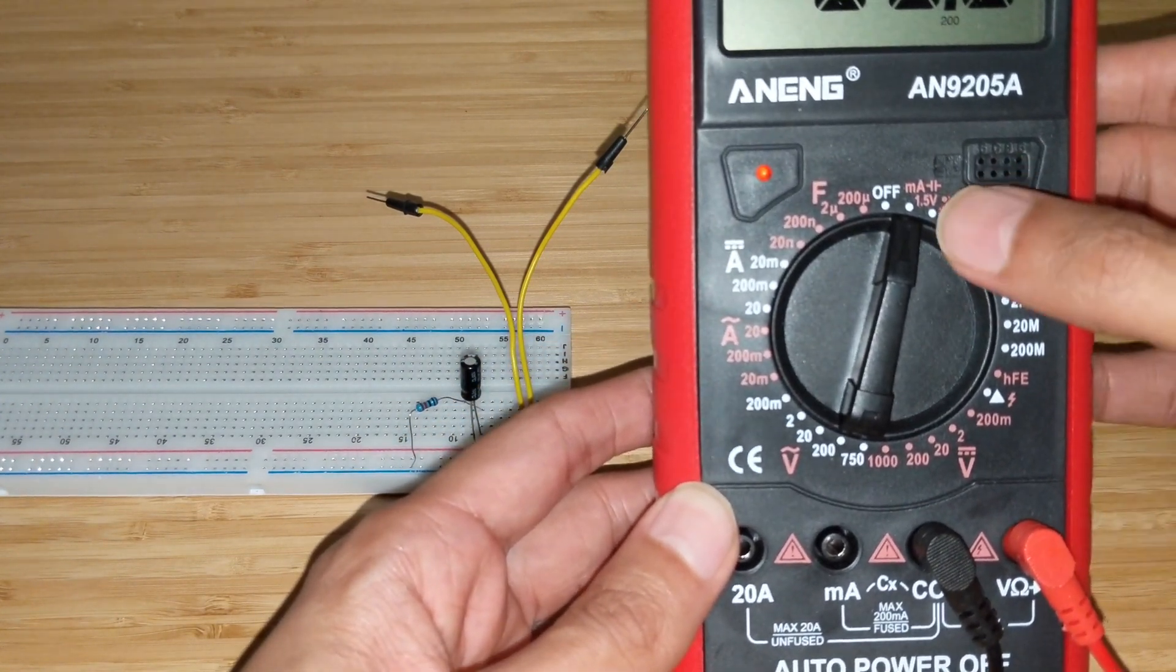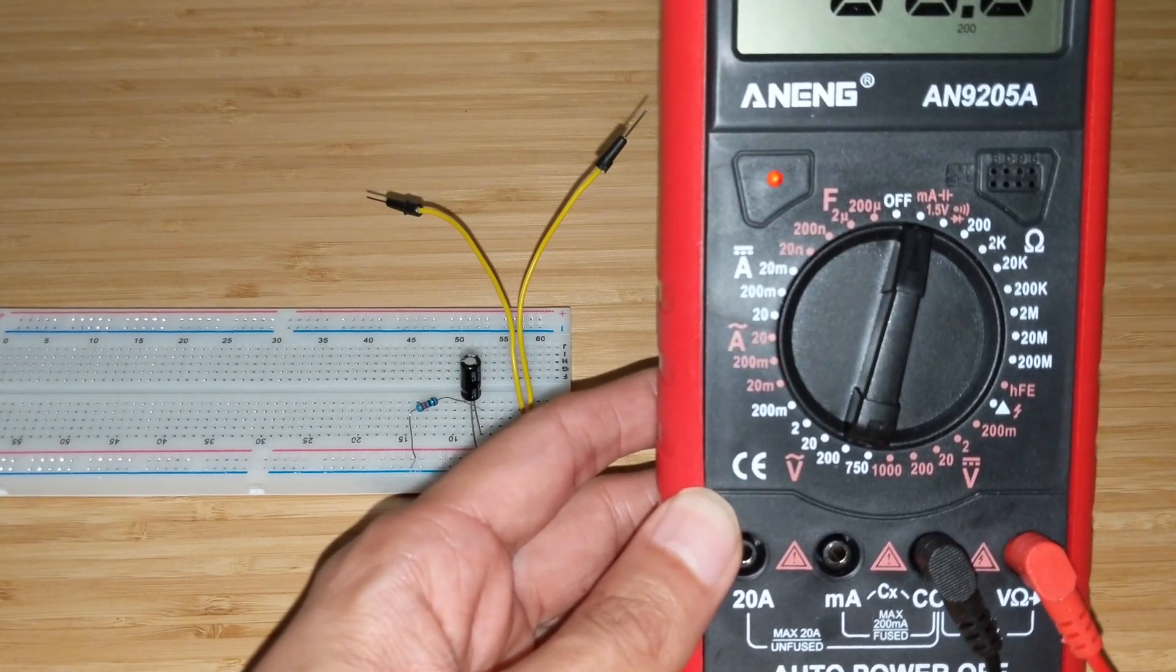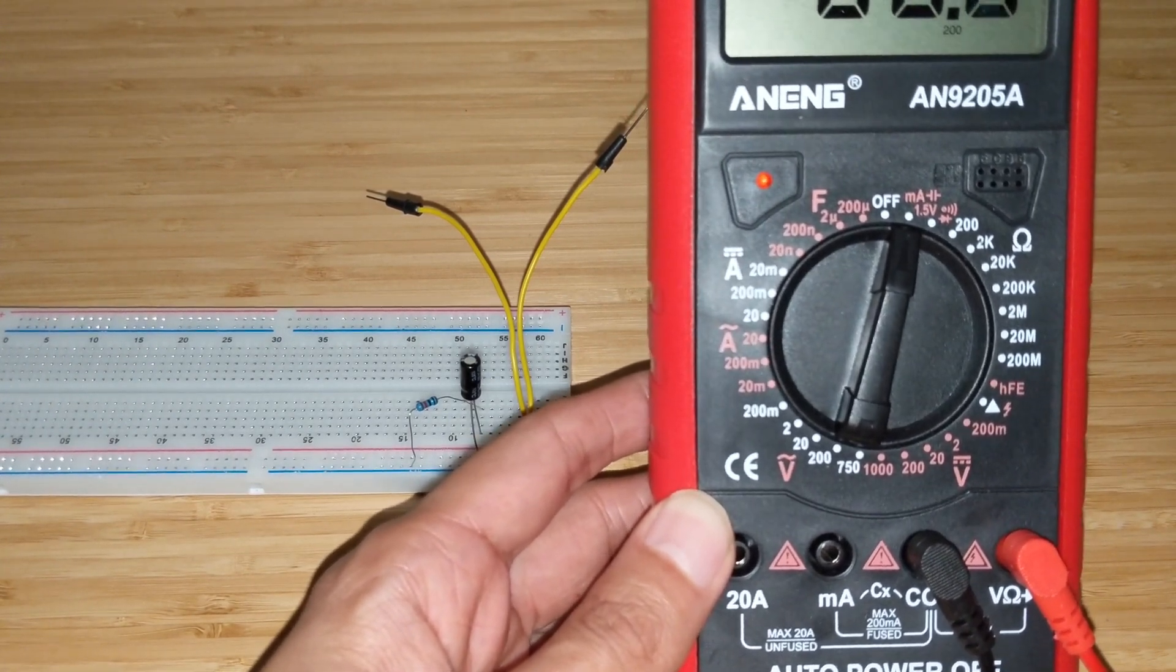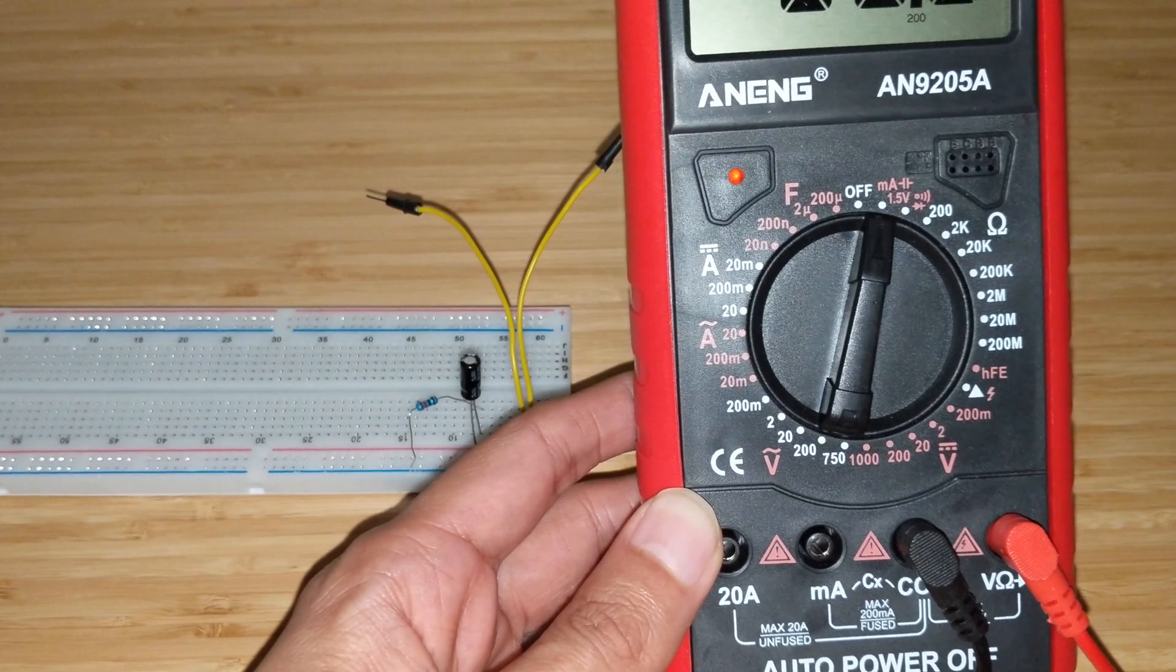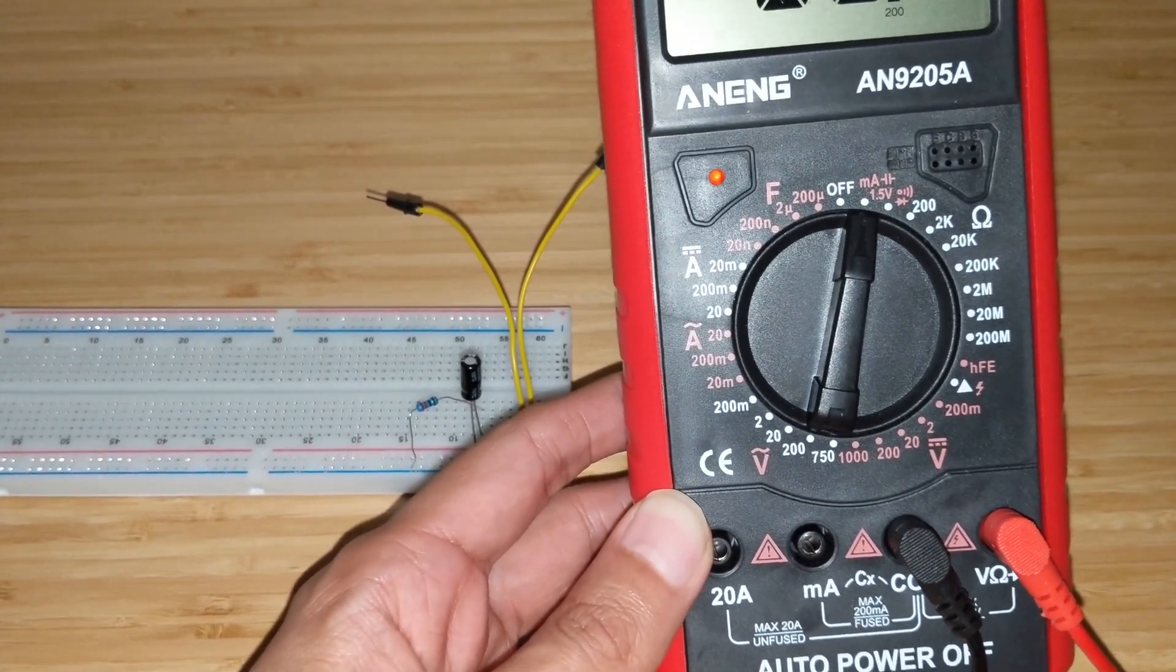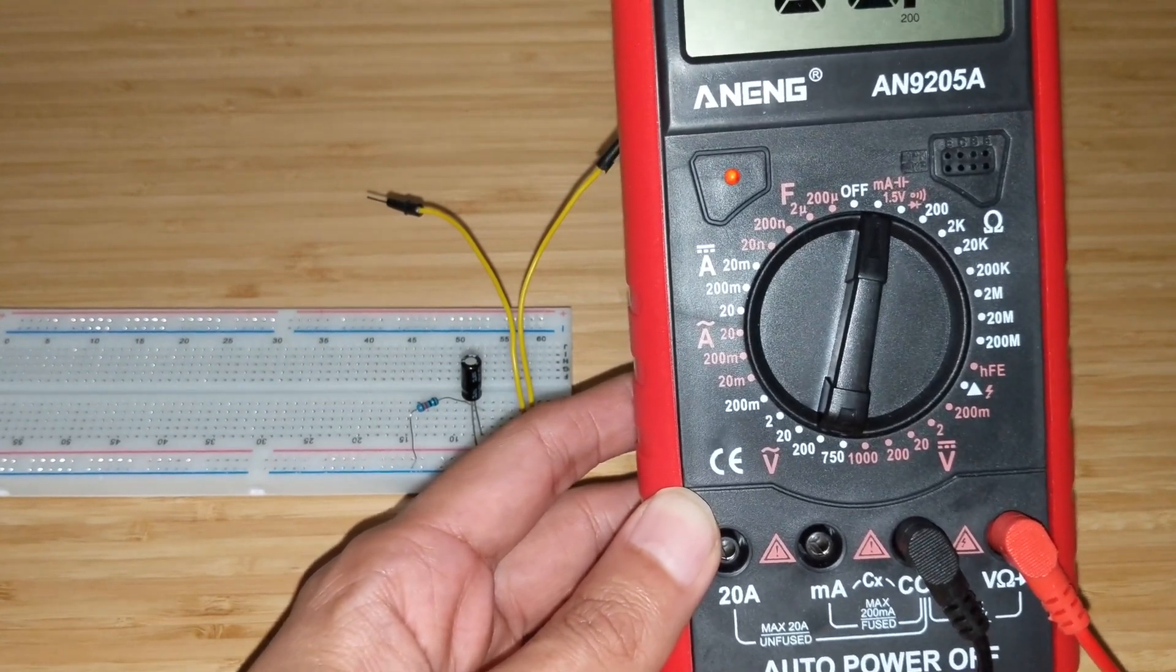I concluded that this was basically measuring current. Now I was partially right. What this option really does is this option is actually a battery tester. So what it does is it helps you actually figure out if the battery that you are testing is good or not.